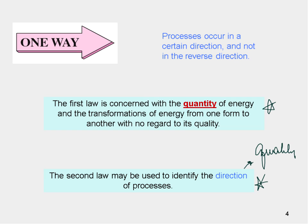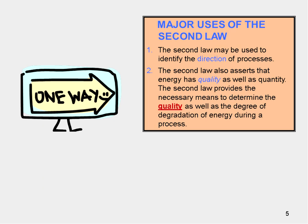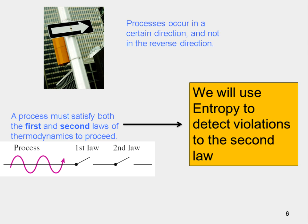The quality of energy is also very important, because energy can degrade. The second law is used to identify the direction of processes, and it also says that the quality of energy, as well as the quantity, is important. Not all energies are equal, and during a process the energy can degrade. Any process must satisfy both the first and second law of thermodynamics. Later, we will use entropy to help detect violations of the second law, but for now we'll talk about direction and quality.